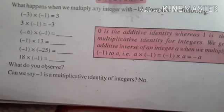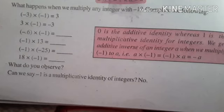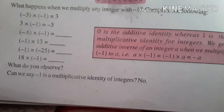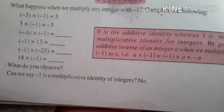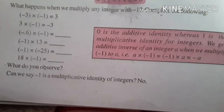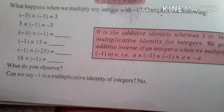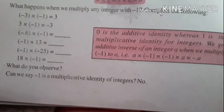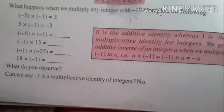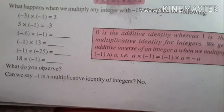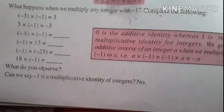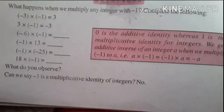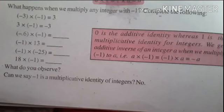If we look at multiplication with minus 1: what happens when we multiply any integer by minus 1? See the examples. Minus 3 into minus 1 is equal to plus 3. 3 into minus 1 is equal to minus 3. When we multiply by minus 1, we change the sign. Minus 6 into minus 1 is equal to plus 6. Minus 1 into plus 13 is equal to minus 13. Minus 1 into minus 25 is equal to 25. 18 into minus 1 is equal to minus 18. What do you observe?